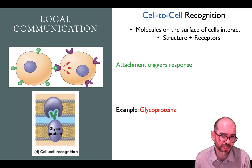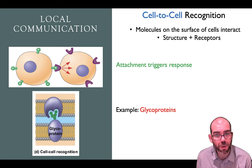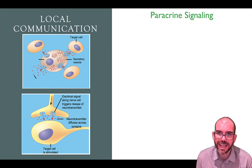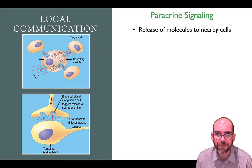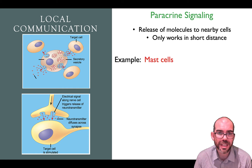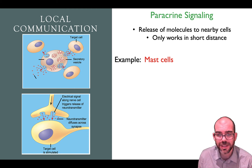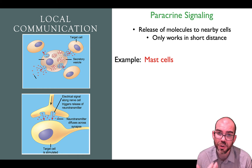Cell-to-cell recognition happens most frequently in the immune system. Your white blood cells need to check other cells to see if they're self or foreign, and respond accordingly. Another type of local communication is paracrine signaling. With paracrine signaling, one cell will release molecules that are received by nearby cells — this only works over a very short distance. For example, a mast cell, if it detects a foreign invader, releases histamines, which can cause inflammation and trigger an immune response.